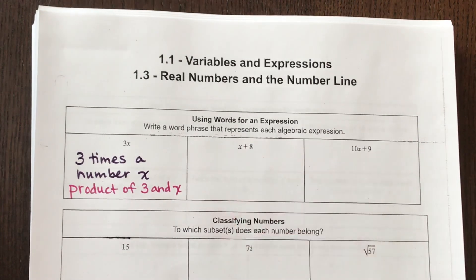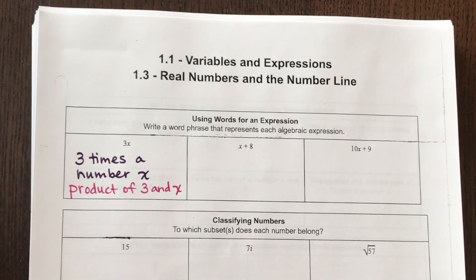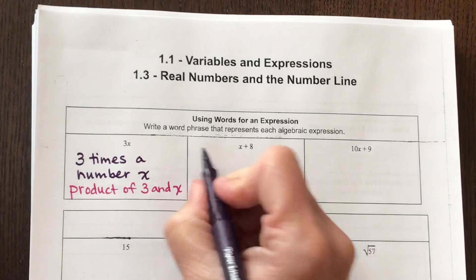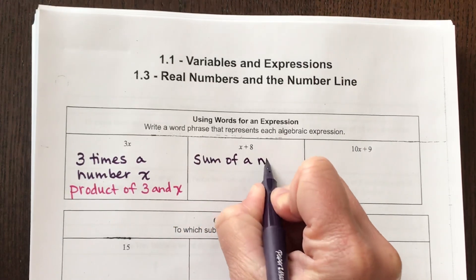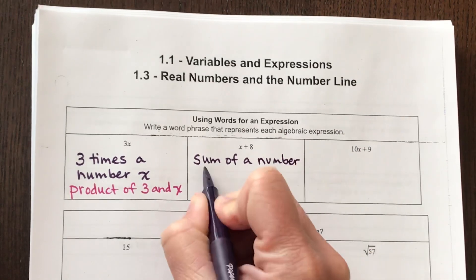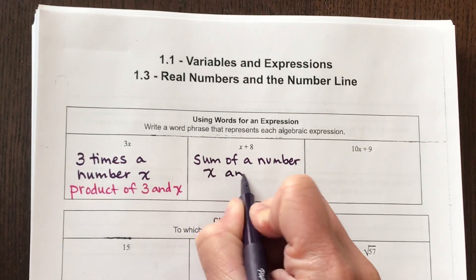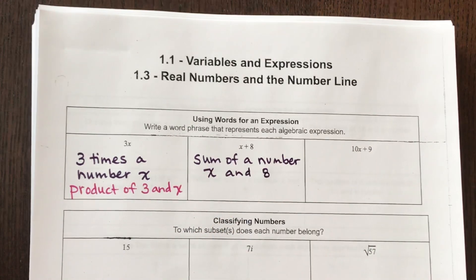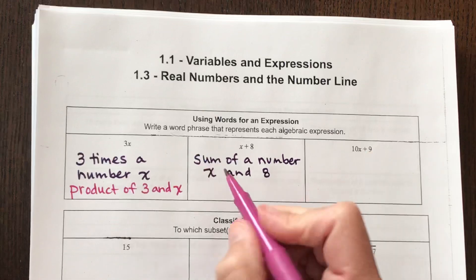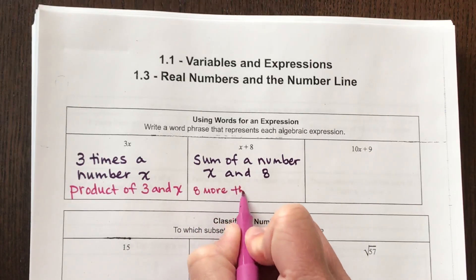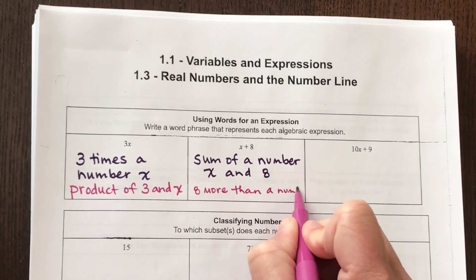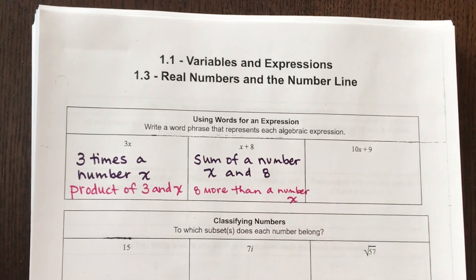x plus 8. How could you write that out using your words? The sum of a number, that number x and 8. You could also say 8 more than a number x.